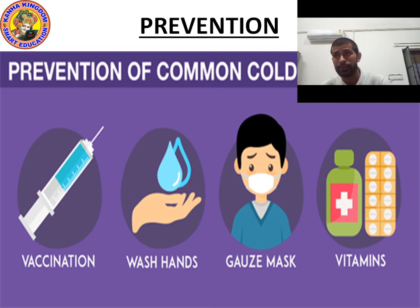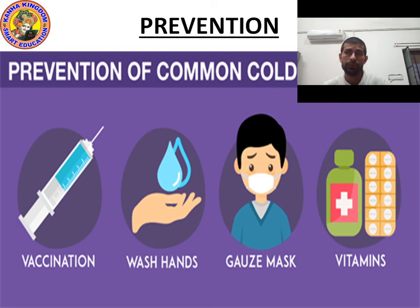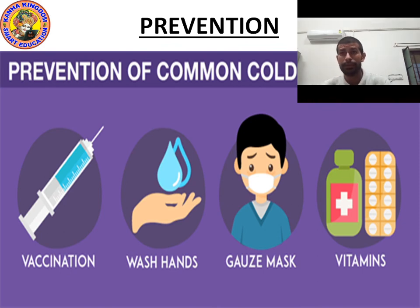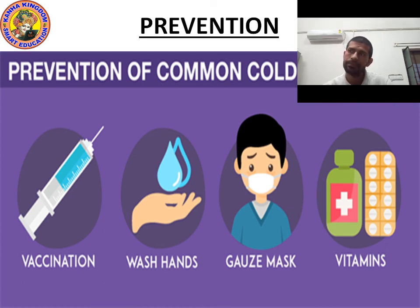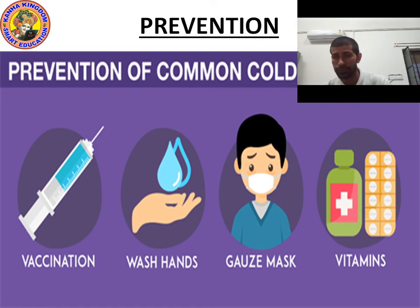Fourth: take vitamins — eat vitamin-rich food; vitamins A, B, C, D, E, and K are all very important for a healthy life. So the four prevention methods for common cold are: vaccination, wash hands, use a gauze mask, and take vitamins.